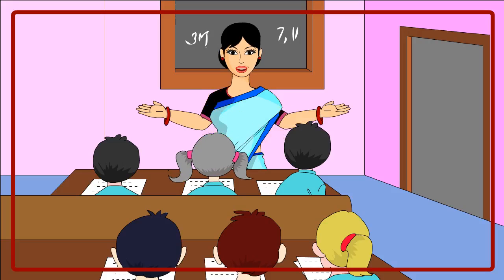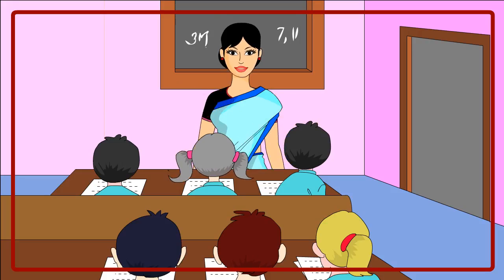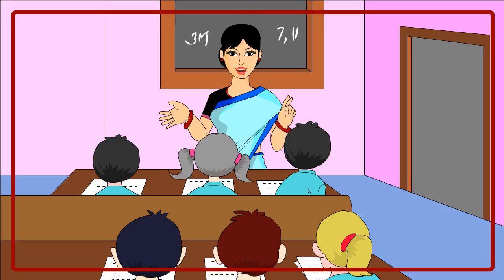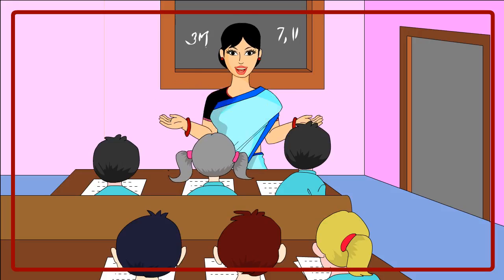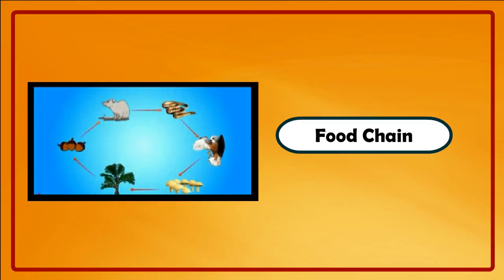So all animals directly or indirectly depend on plants. Children, what is a food chain? A food chain is a sequence of organisms in which every organism is food for the next. A food relationship exists between plants and animals that is shown by the food chain.